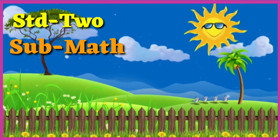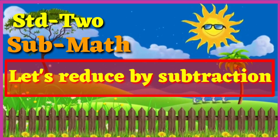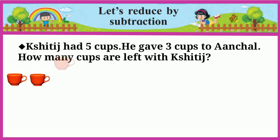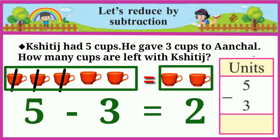Standard 2 subject mathematics. Today we are going to learn subtraction by subtraction. See the first example: Kshitij had five cups. He gave three cups to Achal. How many cups are left with Kshitij? In this example, we have to find how many cups are left. What is given: Kshitij had five cups and he gave three cups to Achal. Two cups are left with Kshitij, so five minus three is equal to two.